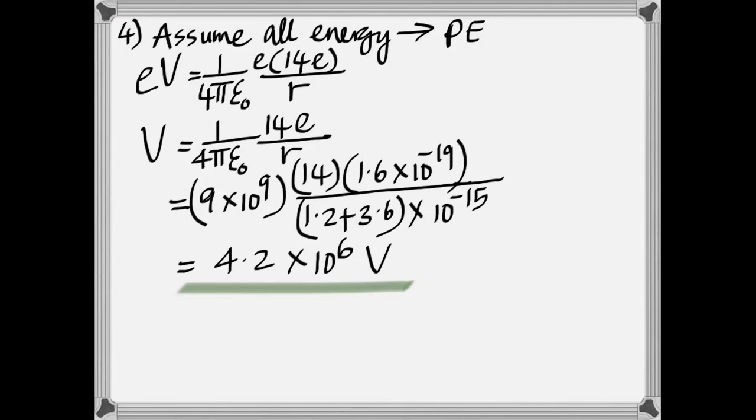In the fourth one, you have to assume that all the energy is potential energy. And therefore, E times the voltage is equal to the formula for electrostatic potential. One of these E's get cancelled. That's why you have one E missing. And then you find the potential. That's 4.2 times 10 to the 6th volt.